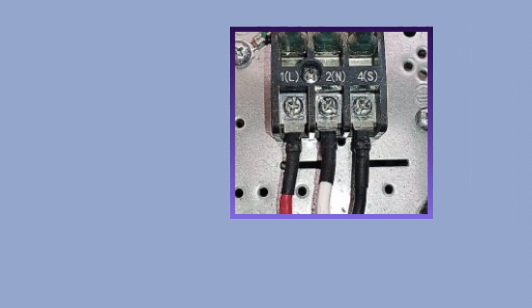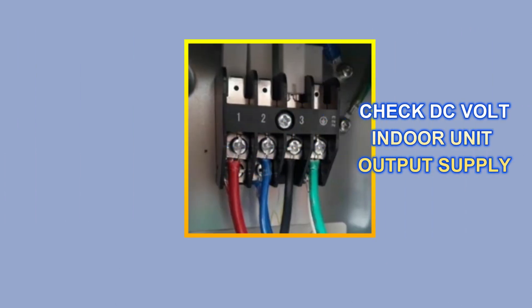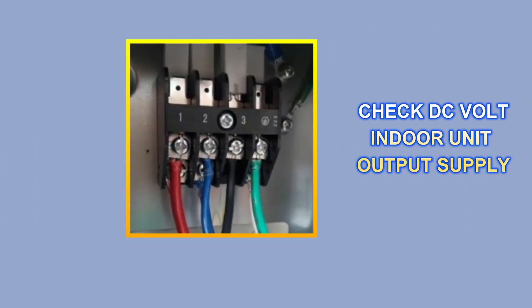If the same color code wire is installed and the error is still coming, then another reason could be this: first, turn on the indoor unit and open the wiring cover of the outdoor unit. Now check the DC voltage at the output supply of the indoor unit.